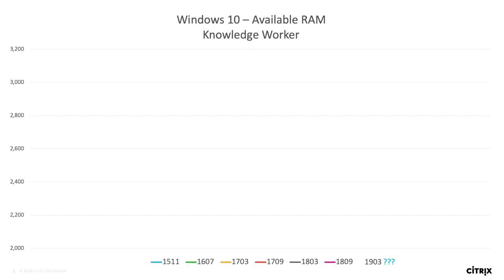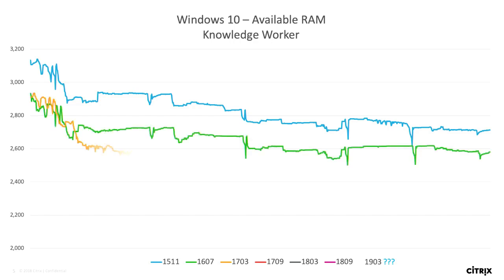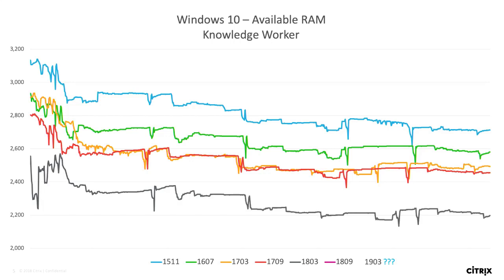If we take a look at the scalability graphs, we're looking at the available memory graph for Windows 10. For all tests we used Login VSI as the test metric, primarily with the knowledge worker workload, which is more resource-intensive than the task worker. Starting from the Windows 10 1511 release, resource consumption only increased with each subsequent release. The only one that went up a bit was 1809, which is the last release. They released 1903 recently and we haven't had a chance to test it yet.